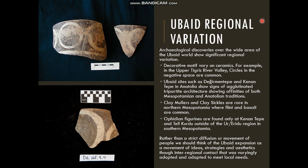I want to outline some of these changes. Decorative motifs vary widely on ceramics. For example, in the Upper Tigris River Valley, we see concentric circles made using negative space. Most Ubaid pottery has designs painted on, but in the Upper Tigris River Valley we see this concentric circle design where the circle is created in the negative — you paint everything black and leave the detail in white. That's relatively unique, found at sites like Salat Tepe, Yenajayani, and Kanan Tepe in the Upper Tigris, but very rarely outside this region.